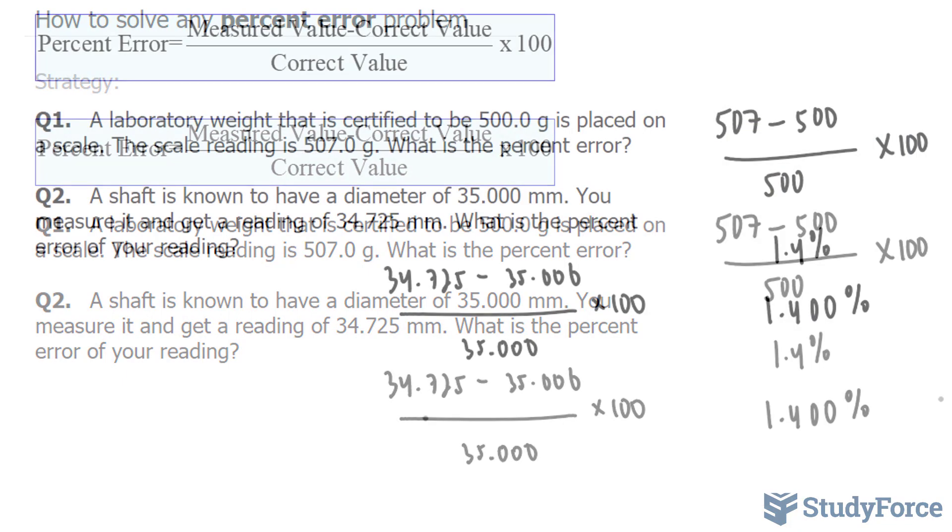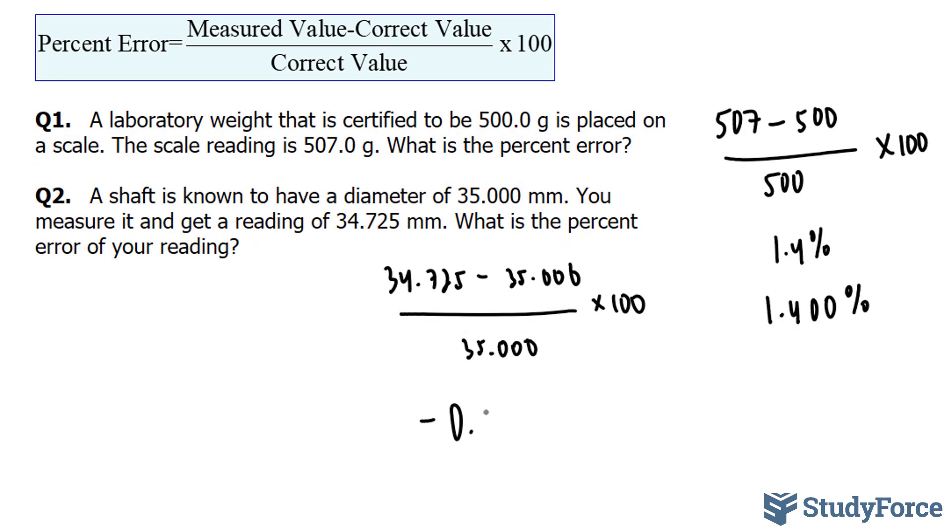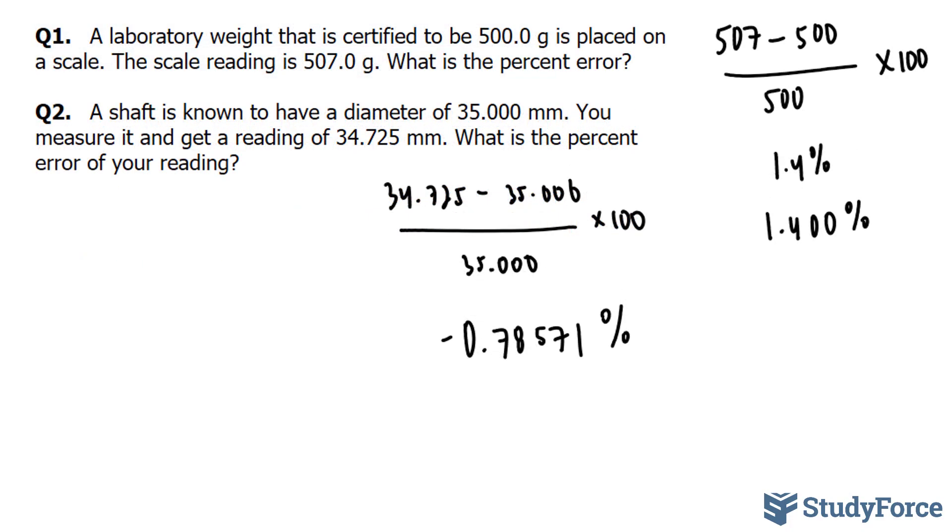So let's write that down, negative 0.78571%. So let's analyze this number for a second. If the experimental value is less than the accepted value, the error is negative, as you can see here. If the experimental value is larger than the accepted value, the error is positive, as you saw in question one.